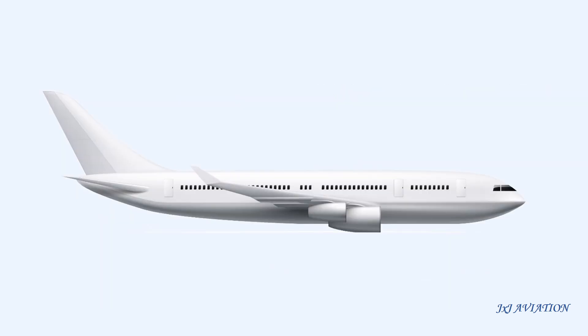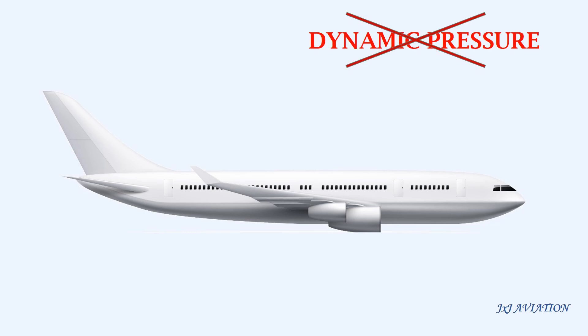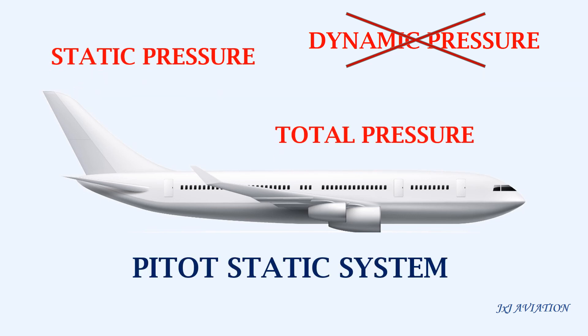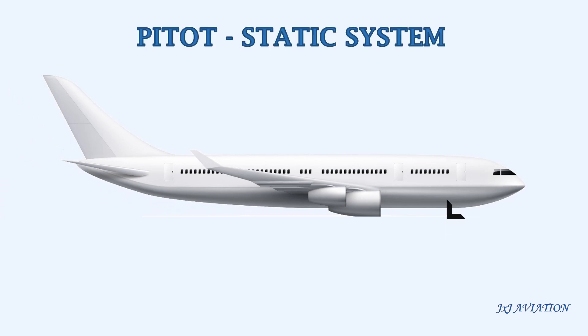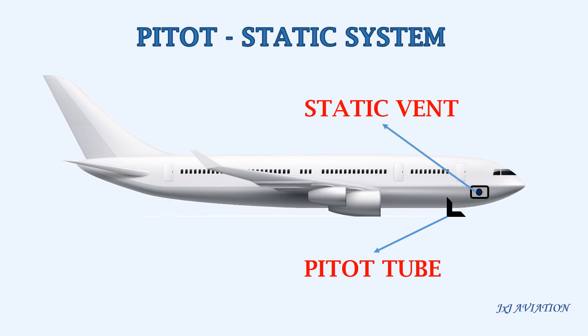To calculate the speed, we need the dynamic pressure. But the dynamic pressure cannot be measured directly. However, we can measure the static pressure and the total pressure by using a pitot-static system. On an aircraft, the pitot-static system consists of a pitot tube which points forward and a static vent which is flush with the aircraft's skin.